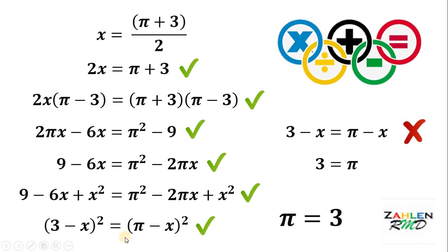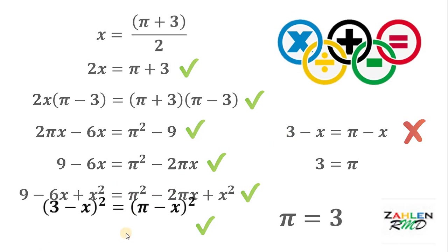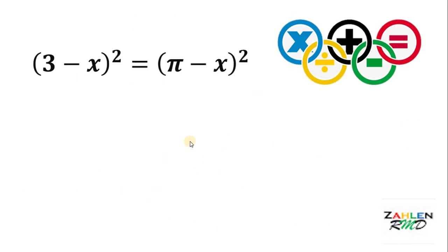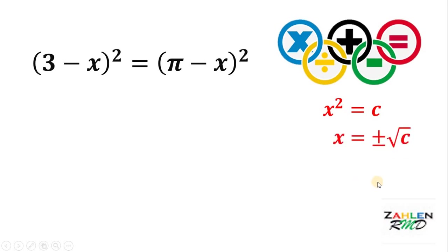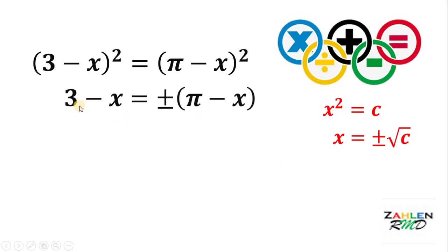Let's focus on this equation. If we take the square root on both sides, take note that if we have x squared equals c and we take the square root on both sides, we get that x equals positive or negative square root of c — we have 2 possible solutions. Therefore, we can say that 3 minus x equals positive or negative the quantity pi minus x.